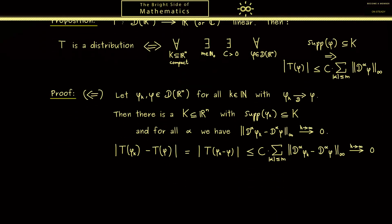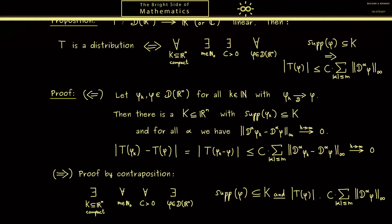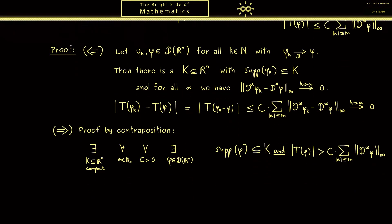Now let's go from the left-hand side to the right-hand side. Here I want to do a proof by contraposition, so we start with the negation of the right-hand side. This means that we just have to exchange the quantifiers. So here we have: there exists a compact set such that for all m and all c there exists a test function phi. And the negation of the implication is just that the support is still in K, but the inequality goes the other way around. This means that we have a greater sign here. So this is our assumption and where we want to get to is that T is not continuous.